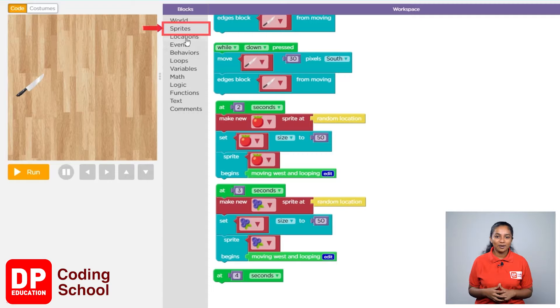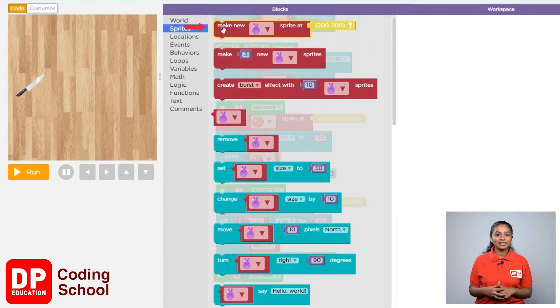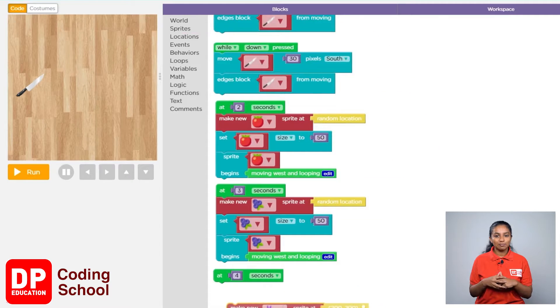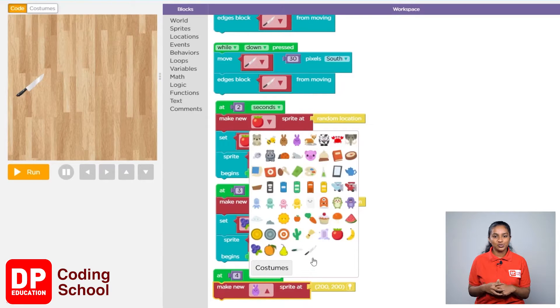Next I clicked on sprites. Now drag the make new sprite at block like this and place it below the at 4 seconds block. Now click the small arrow and choose orange.